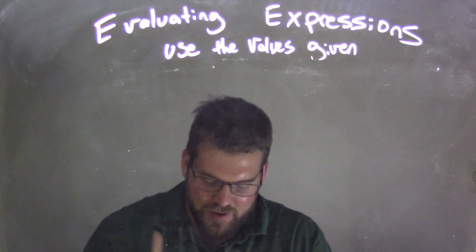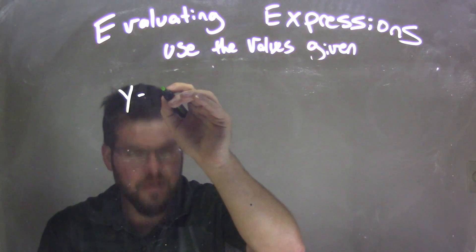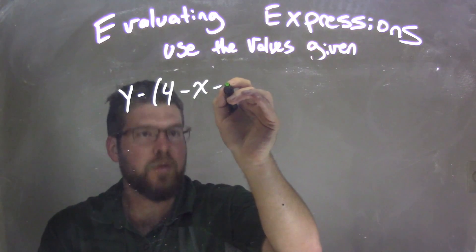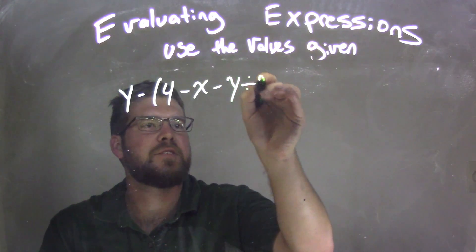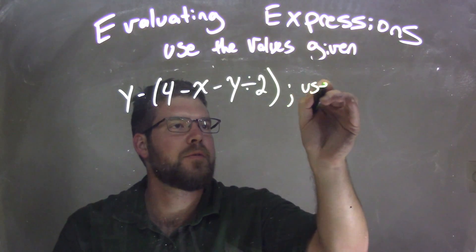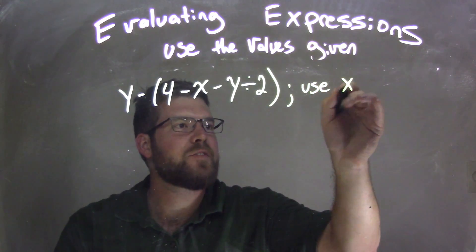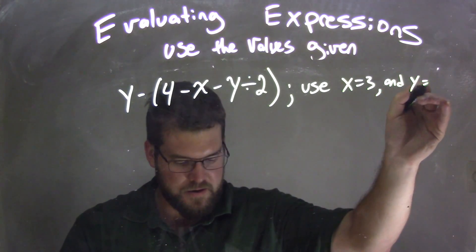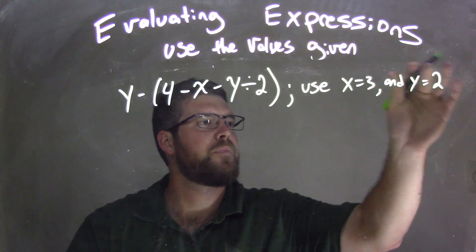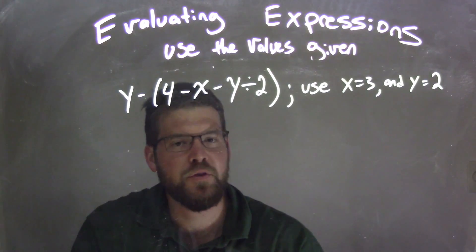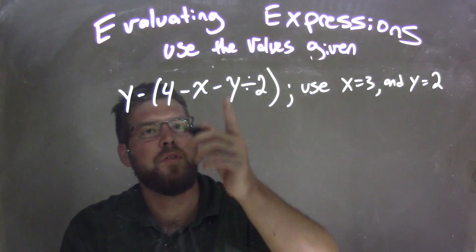So if I was given this expression, y minus 4 minus x minus y divided by 2, and we wanted to use the variables x equals 3 and y equals 2. Well, our first step is to substitute these variables, the numbers, for the variables here.